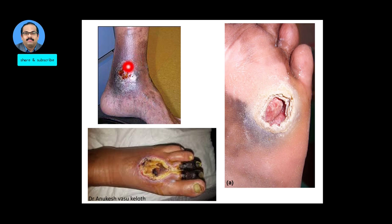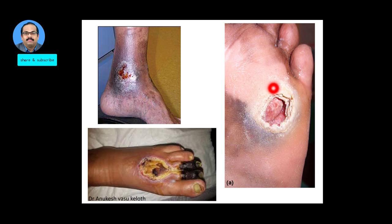Here is a venous or varicose ulcer. This is an ischemic or arterial ulcer — as you can see the gangrene of the toes along with the ulcer. And you can see how deep this neuropathic or trophic ulcer is.